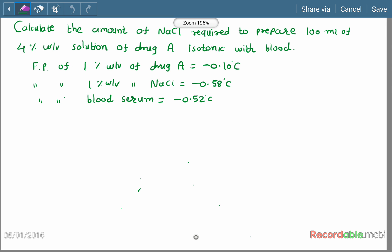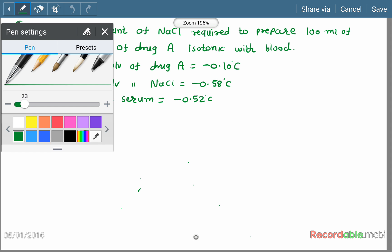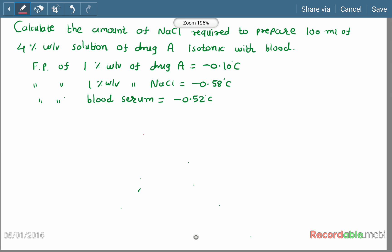Let us do the example: calculate the amount of sodium chloride, the adjusting substance required to prepare 100 ml of 4% weight by volume solution of drug A isotonic with blood. Here we have to prepare an isotonic solution of the drug by using sodium chloride as an adjusting substance.